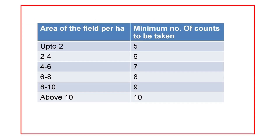This is one of the most important tables to remember in seed technology — the field area per hectare to the minimum number of counts to be taken. Up to 2 hectares: 5 counts. 2 to 4 hectares: 6 counts. 4 to 6 hectares: 7 counts. 6 to 8 hectares: 8 counts. 8 to 10 hectares: 9 counts. Above 10 hectares: 10 counts.